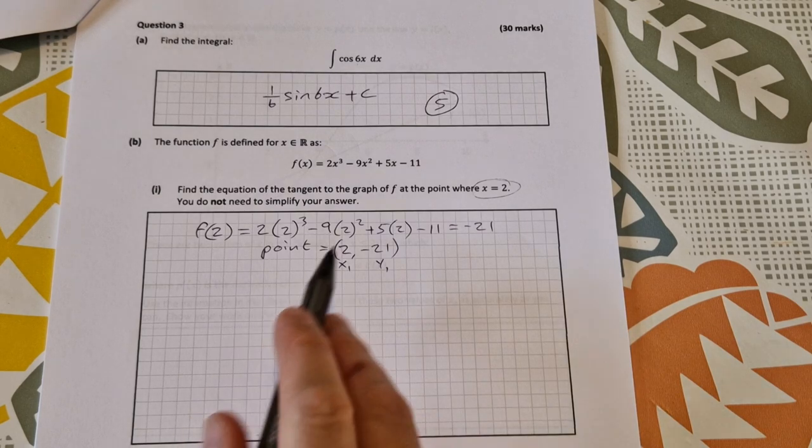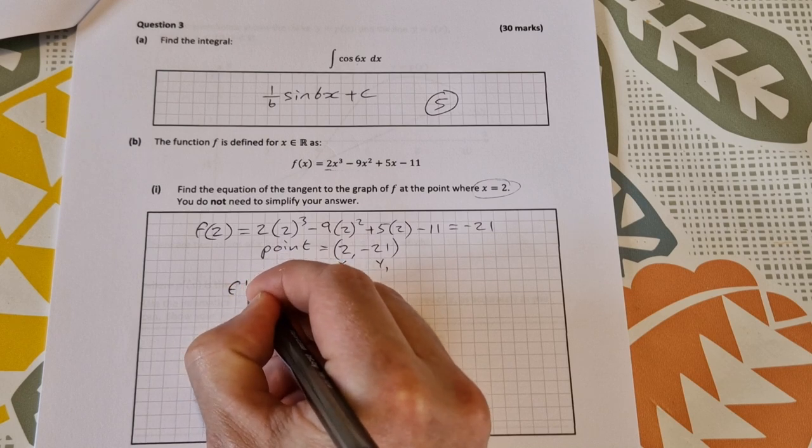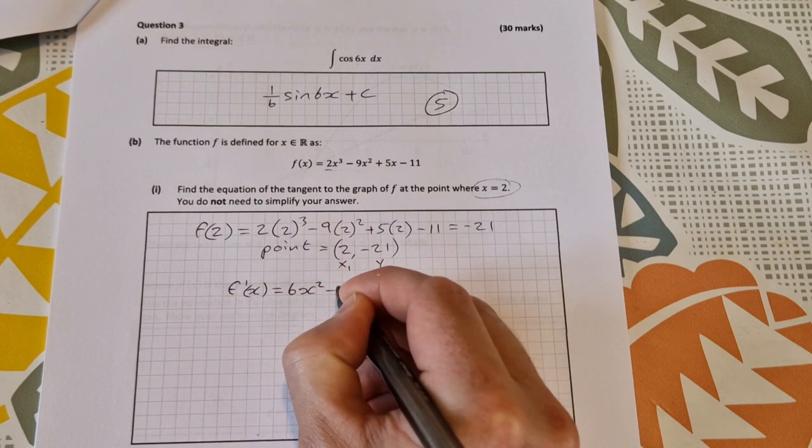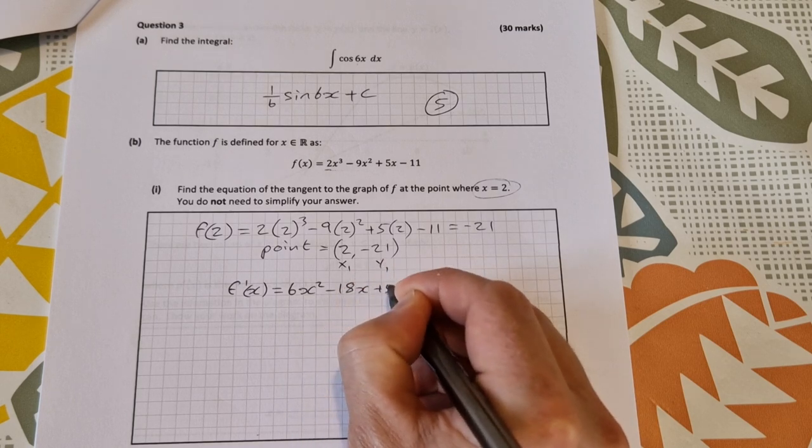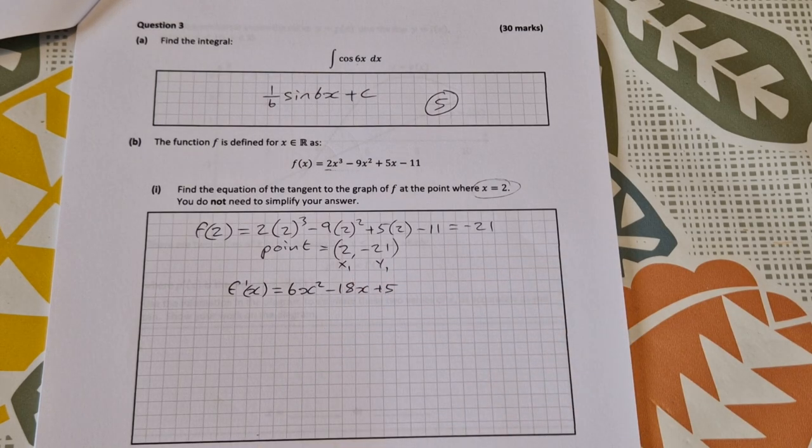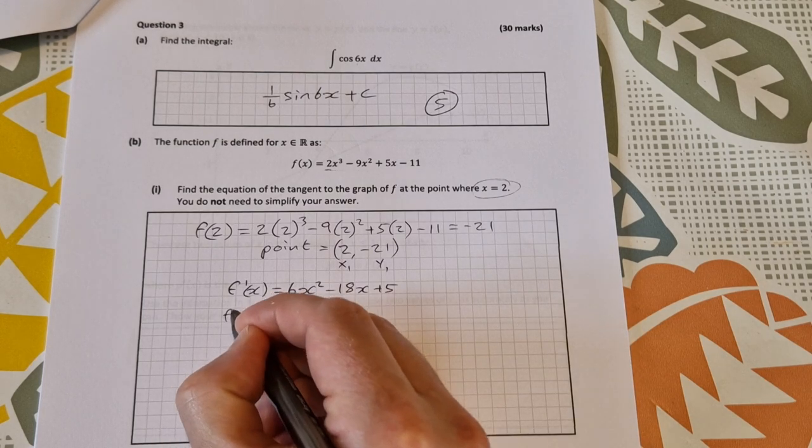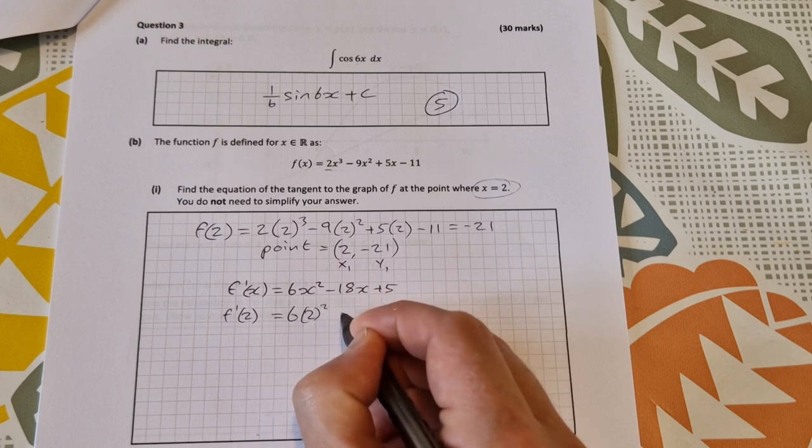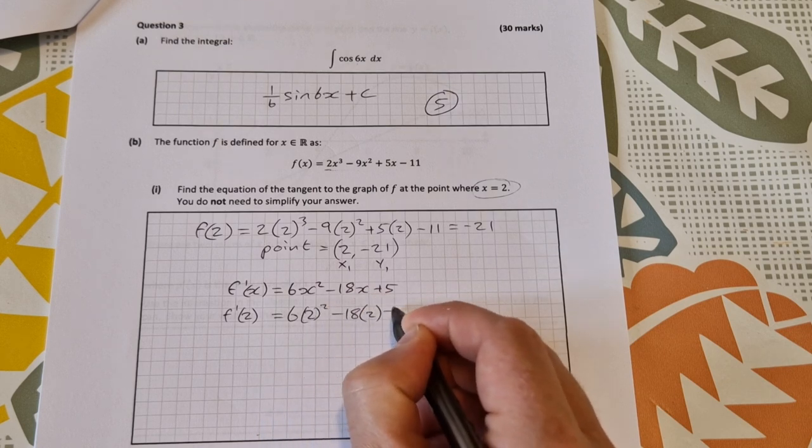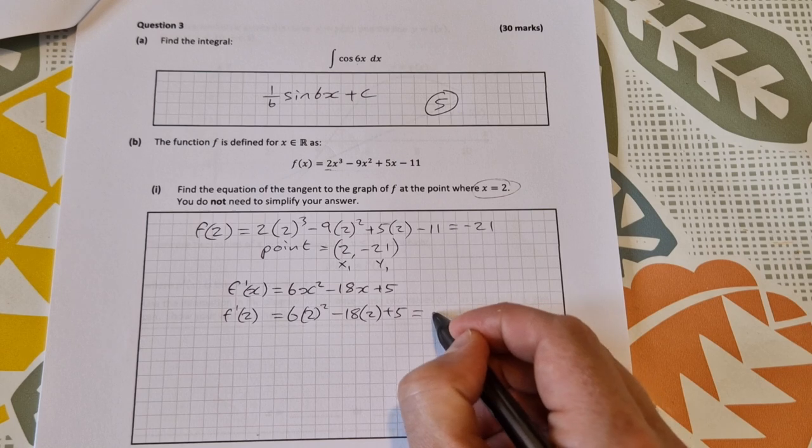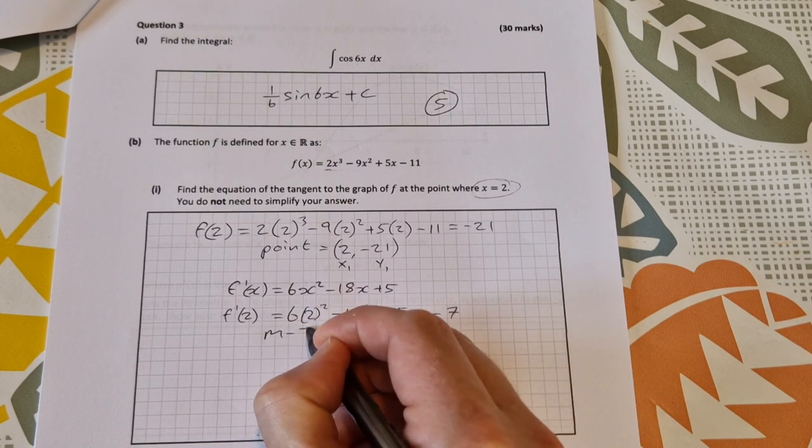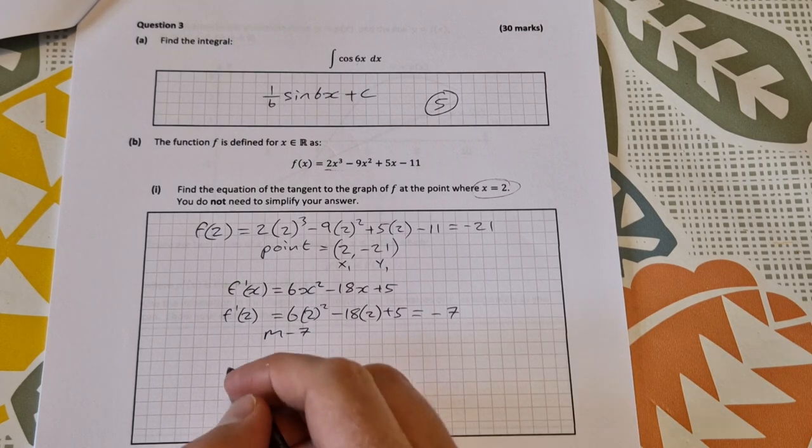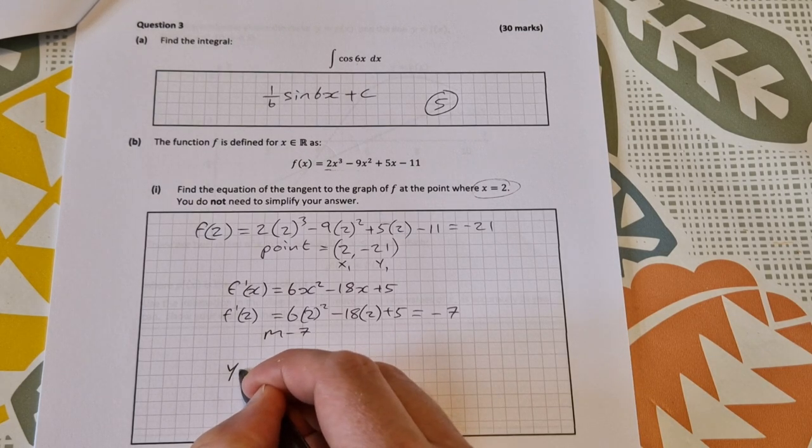Then we need to find the slope, so we're going to differentiate this and get f'(x). That's equal to 6x² - 18x + 5. Then to find the slope at x equals 2, we find f'(2). So that's equal to 6 times 2² minus 18 times 2 plus 5, which works out to be minus 7. So m equals minus 7.